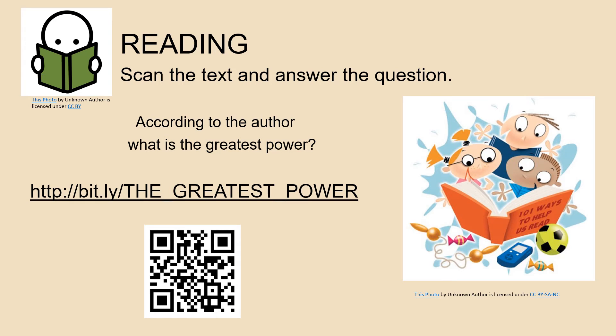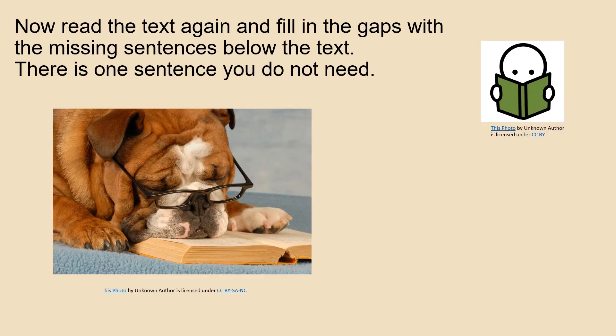Now is the time to do some reading. You should either scan the QR code or copy and paste the link into your browser to open the text. After you have opened it, you should scan it and answer the question: According to the author, what is the greatest power? According to the author, the greatest power is incorruptibility, and everyone has the potential to be a hero because everyone has the power to be incorruptible.